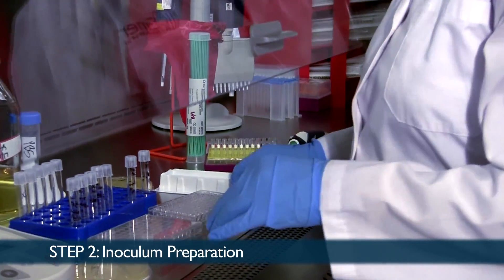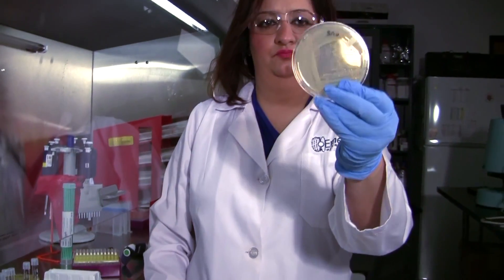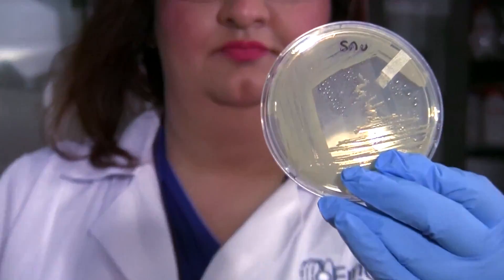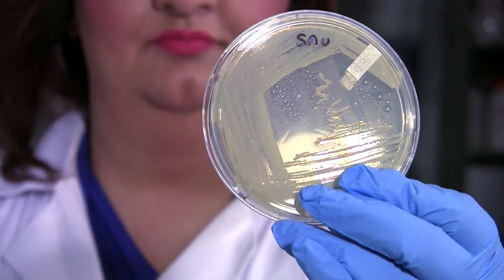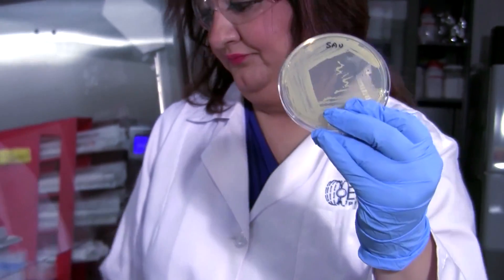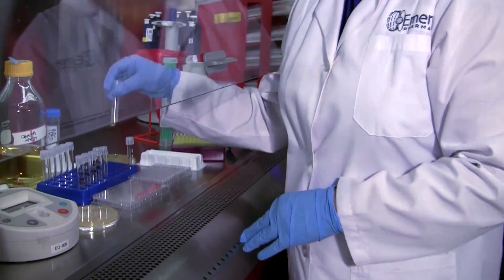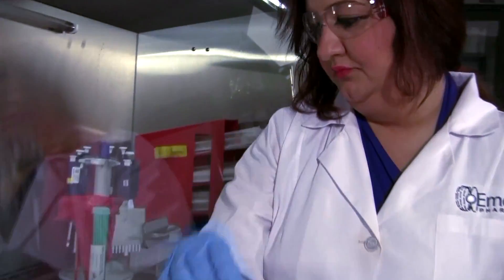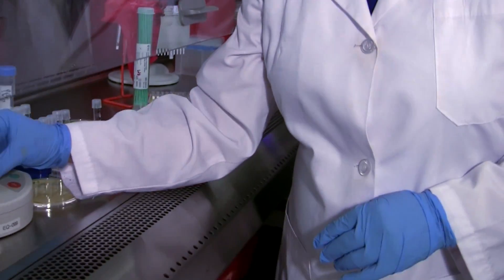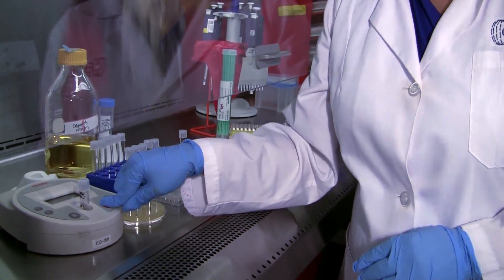Step two is inoculum preparation. Here I have a Staph aureus strain that I will be using as the test organism. This is a QC strain that I will be using to prepare the bacterial inoculum of 0.5 McFarland turbidity standard, verifying the OD by using a colorimeter.